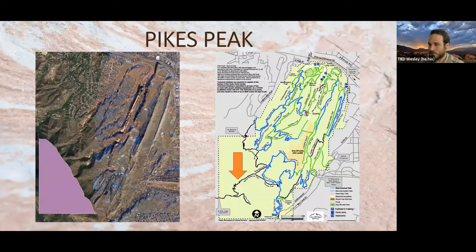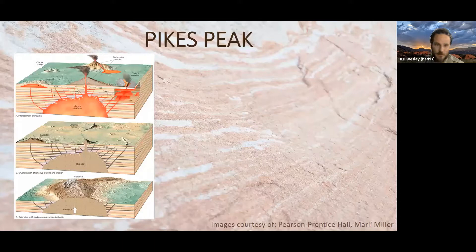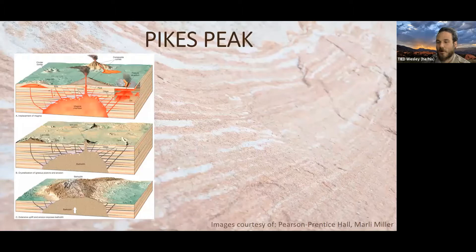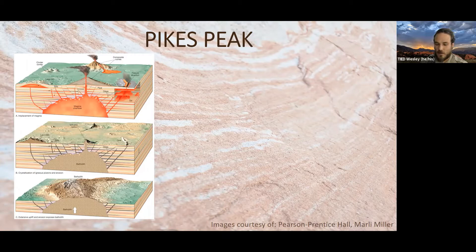Pikes Peak Granite is what we call a batholith — it's really just a giant bubble of rock. If you imagine a lava lamp warming up, that wax on the inside forms a column pushing up, which slowly cools and hardens. In the diagram we can see a magma chamber that is the top of that batholith column. As it cools and hardens it becomes a batholith, and over time it can be exposed due to erosion of surrounding strata or because of an uplift event — like the one about 70 million years ago.